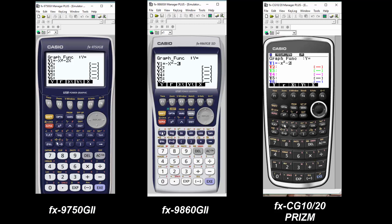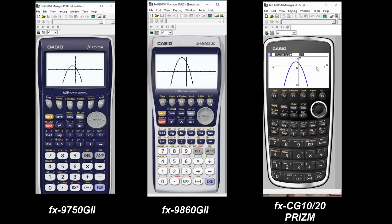So we're just going to enter negative x squared minus 2x plus 2, a simple quadratic function, and hit execute. And now you're going to see the graph in each, depending on the calculator it looks slightly different, resolution as you move up the line.